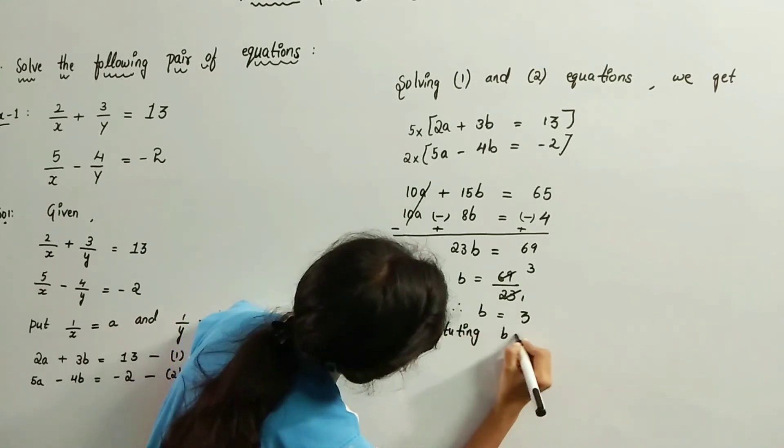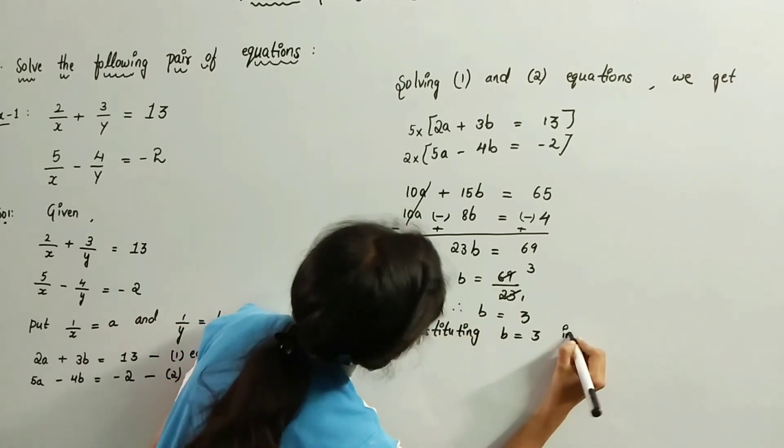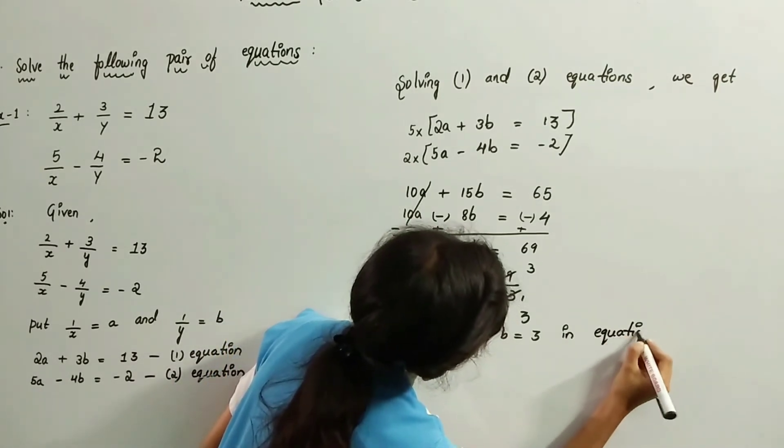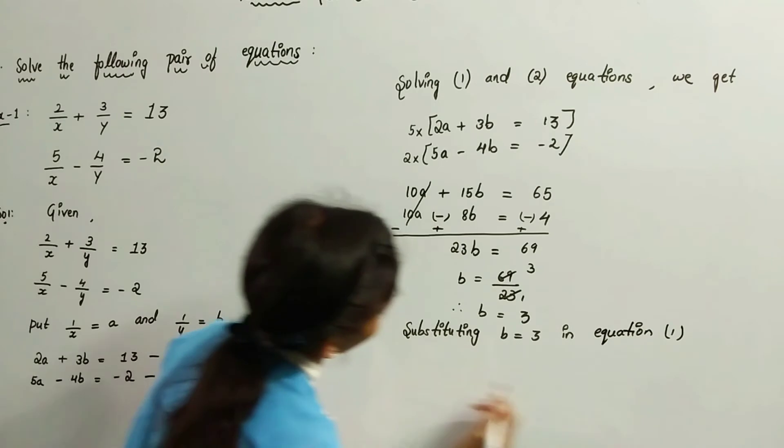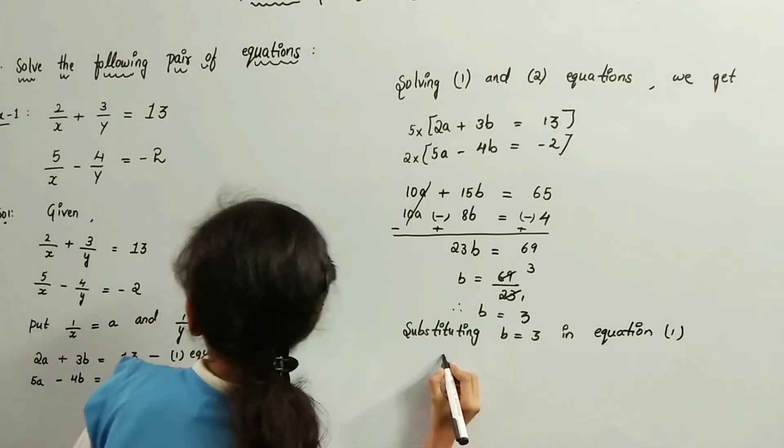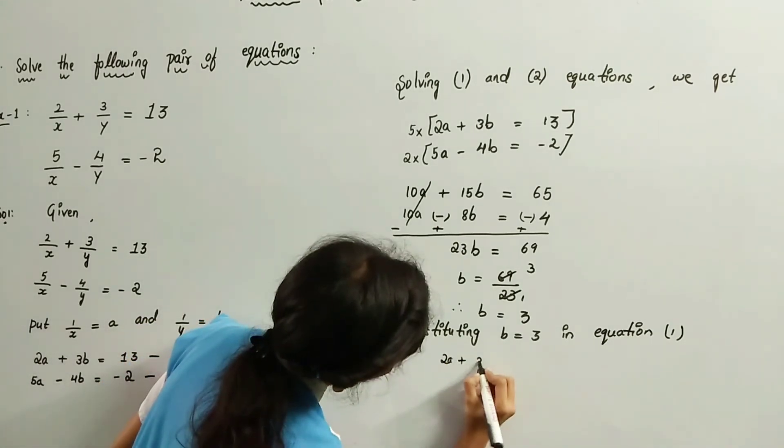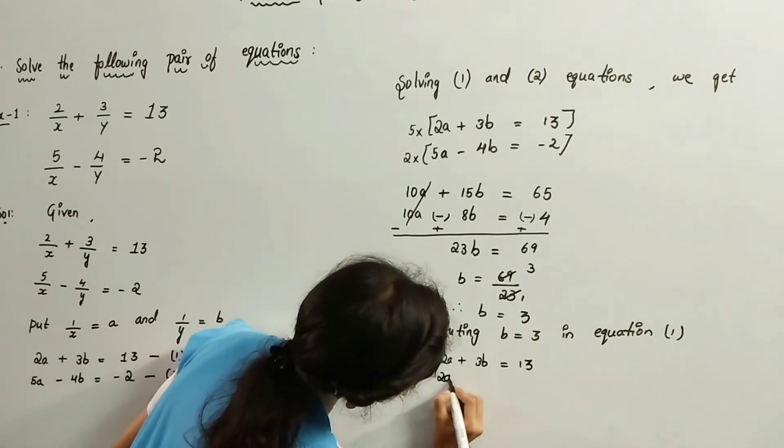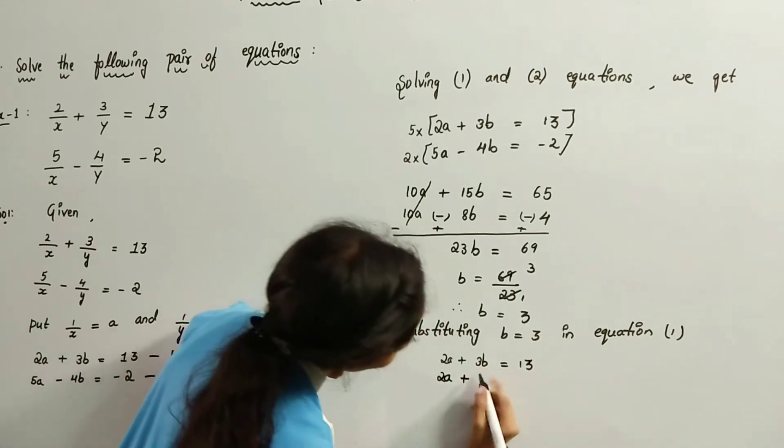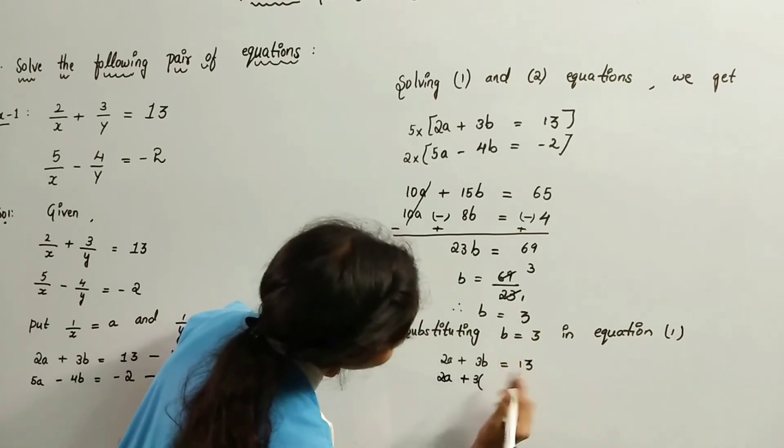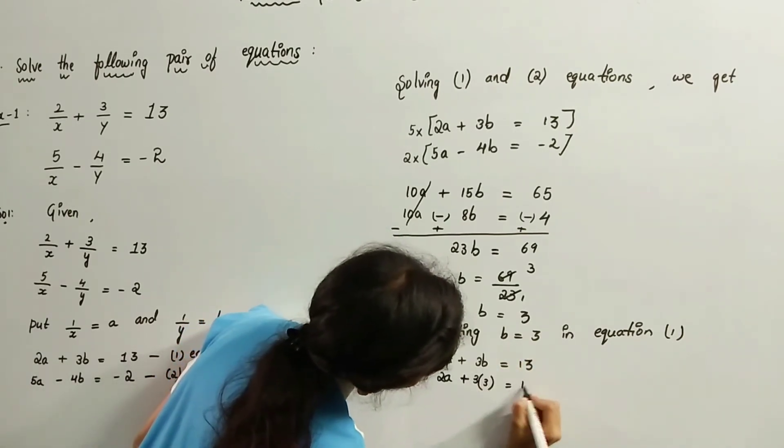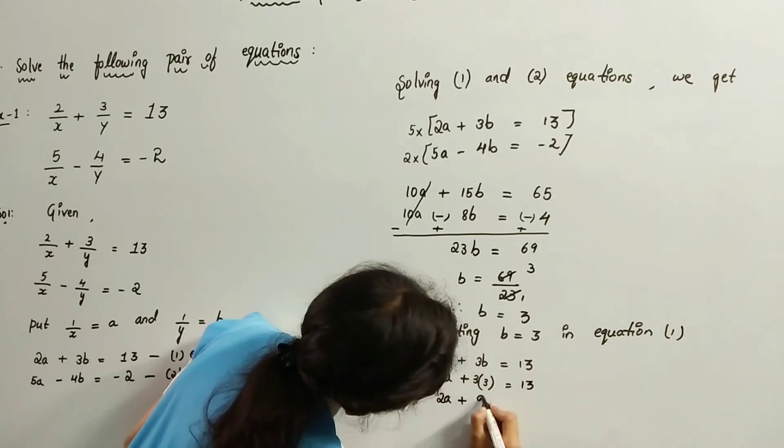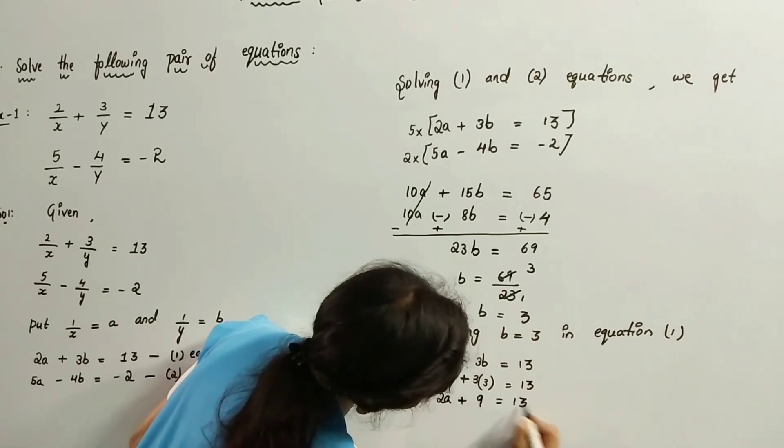Substituting B equals 3 in equation 1, 2a plus 3b equals 13. 2a plus, replacing the value of B, 3 times 3, which is 9, equals 13.